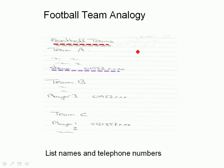We're going to start off with a very simple three-team football league: team A, team B, and team C. These teams have players — for example, Steve and his phone number. What we want to be able to do is ask someone about Steve and they'll give us his phone number. That's basically the same as what happens with DNS: you give a domain name and you get back an IP address. Here, you give a name and you get back a phone number. The obvious way to organise it is in a simple flat list — just like the old host file.